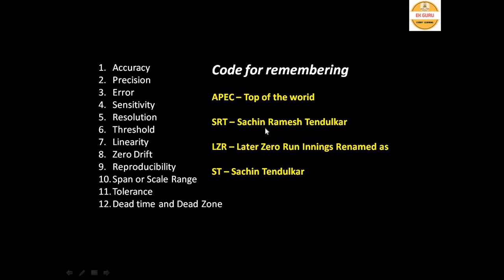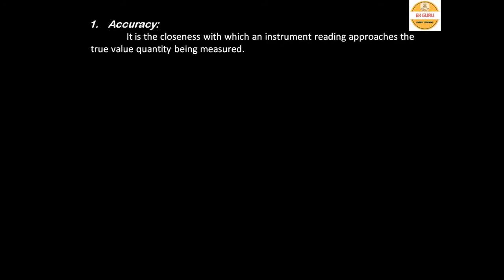The first characteristic is accuracy. Accuracy is nothing but the closeness with which an instrument reading approaches the true value of the quantity being measured. If an instrument measures exactly the true value of a quantity, that instrument is 100% accurate.